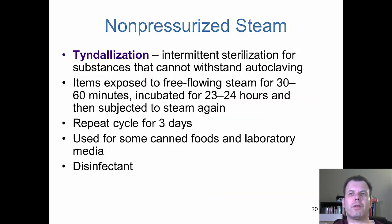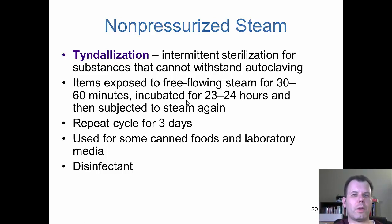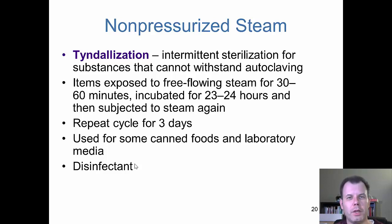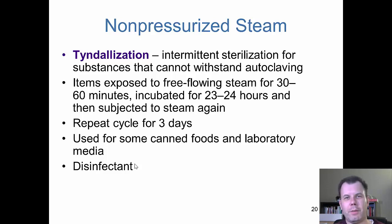Another type is tyndallization, an intermediate sterilization for substances that can't withstand autoclaving. You use free-flowing steam for 30 to 60 minutes, then incubate for 23 to 24 hours, then give high steam again, and repeat this cycle for three days. This is how a lot of our canned foods and media can be done. A lot of our canned foods are steamed under pressure so you don't lose the nutrients on the inside, but you can sterilize it so when you open it up you're not going to get bacteria. That's why canned foods can stay for a long, long time on your shelves — they pretty much eliminate everything inside.